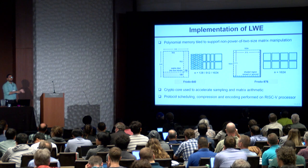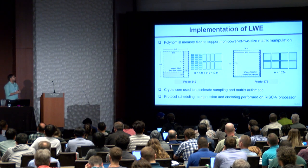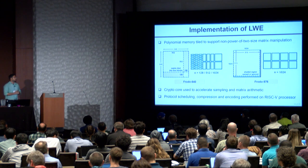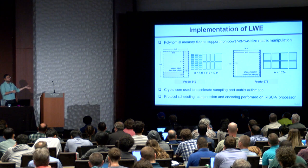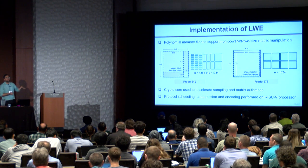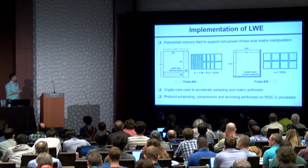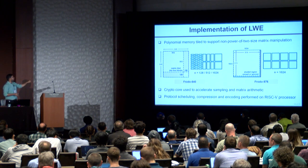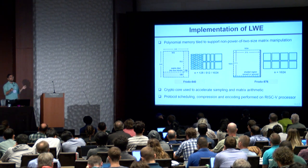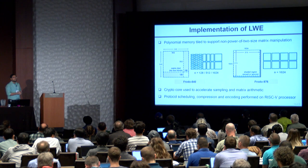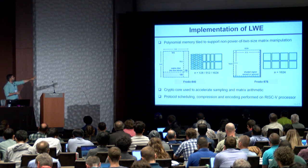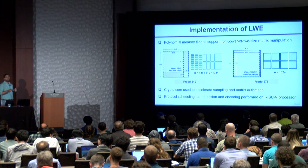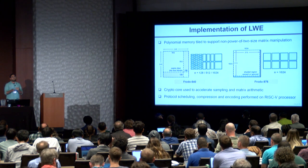We also evaluated the LWE-based key encapsulation scheme Frodo to demonstrate the flexibility of our implementation. Unlike ring LWE and module LWE, the matrix sizes in Frodo are not powers of two, so we cannot use the polynomial memory as-is. Instead, we tile the array rows and columns into specific sizes. For Frodo-640, we split the 640-element array into 512 and 128, accessing the polynomial memory in non-uniformly sized chunks. For Frodo-976, we use a 1024-sized array and simply zero out or ignore the last 48 elements.